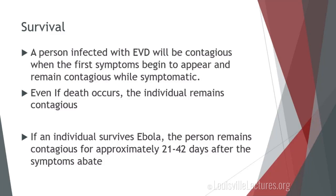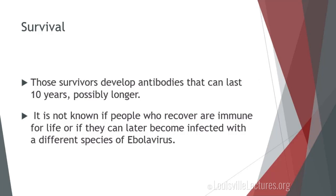What about survival? A person infected with Ebola virus disease will be contagious when symptoms first appear, and they remain contagious while symptomatic. Even if death occurs, the individual remains contagious. If an individual does survive Ebola, the person remains contagious for approximately 21 to 42 days after symptoms abate. Survivors do develop antibodies that can last 10 years, possibly longer. It's also not known if people who recover stay immune for life or if they could become infected with a different species of the Ebola virus.